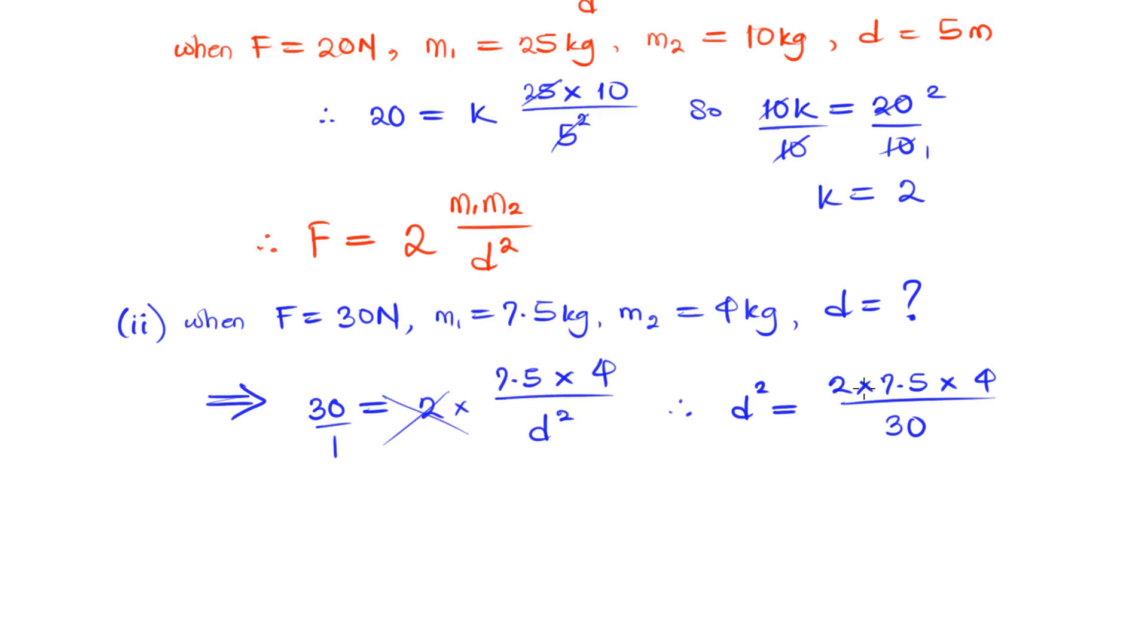15 goes into 30 twice, 2 can go in 4 twice, that means D raised to power 2 is equal to 2.